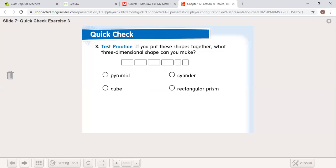Test practice. If you could put these shapes together, what three-dimensional shape would you make? I got four rectangles and two squares. I would make a rectangular prism. It's basically a rectangle, but it's a 3D shape. That's where the word prism comes in.